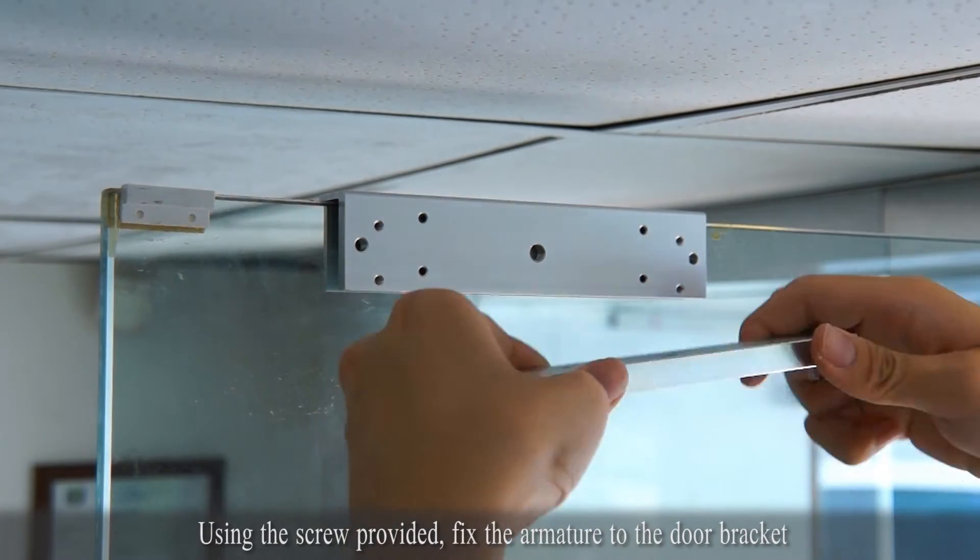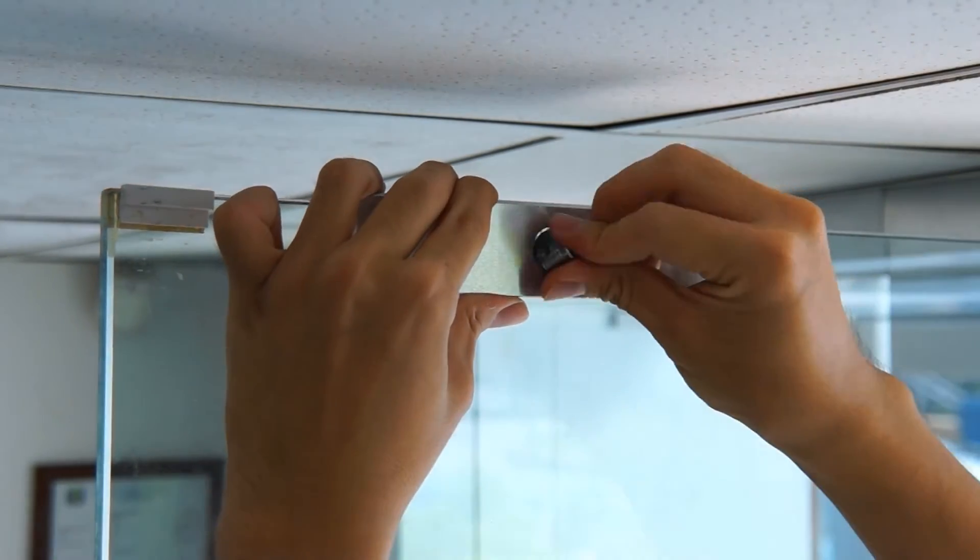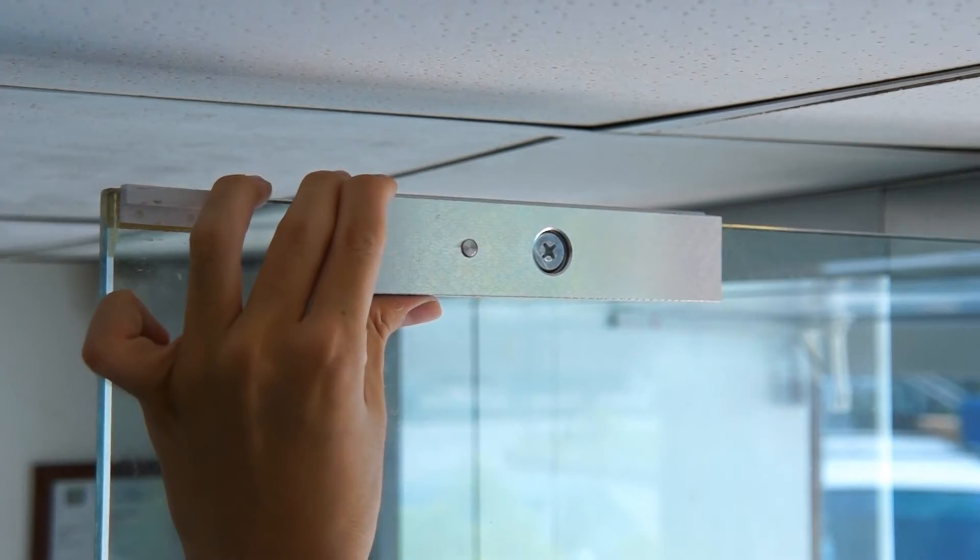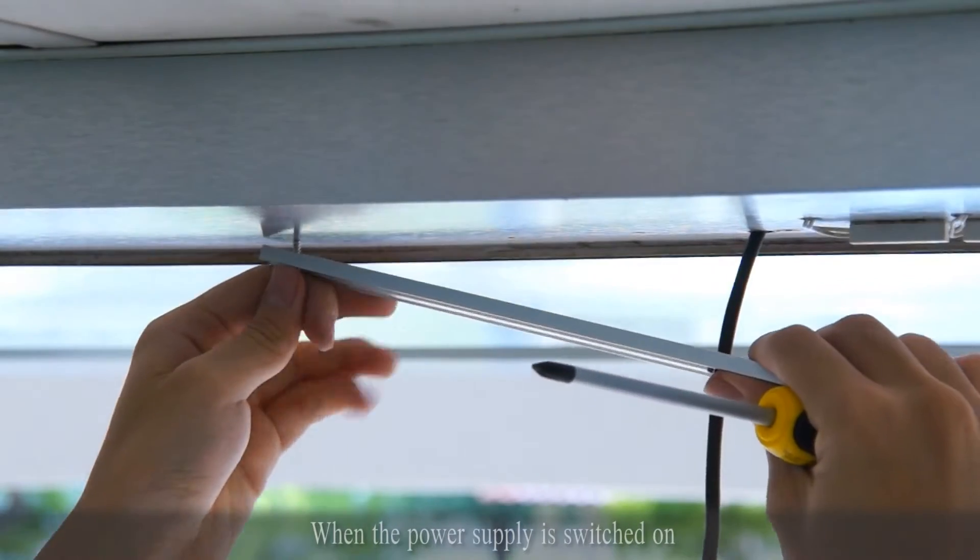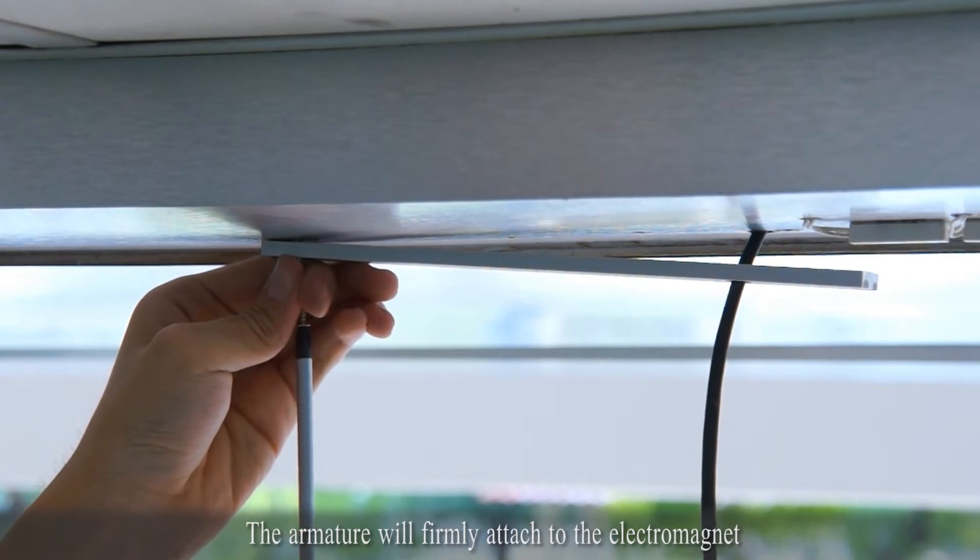Using the screw provided, fix the armature to the door bracket. When the power supply is switched on, the armature will firmly attach to the electromagnet.